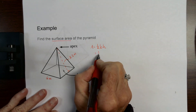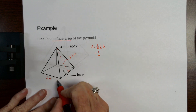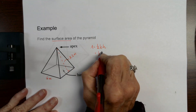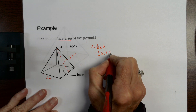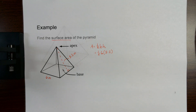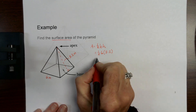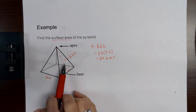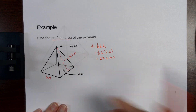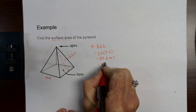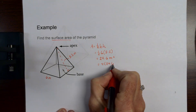So I've got one half. The base here is six — and since it's a square, all sides are six. Six times 8.2: one half times six times 8.2 gives me an area of one triangle that's 24.6 meters squared. But I don't just have one triangle — I have four triangles all the way around the pyramid. So I go four times 24.6 meters squared.